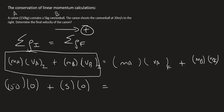Then after the collision, we know that the mass of the cannon will still be 150, but we don't know what its velocity is. We do know that the cannonball, which has a mass of five, moves to the right at 20 meters per second.